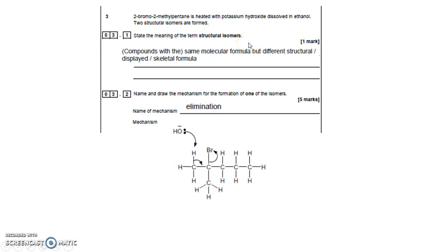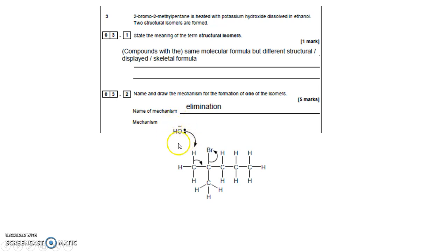Quick note: you draw OH⁻ — the minus can go anywhere, really, though it does go on the O. As long as you've got OH⁻ with a lone pair on the O, that will suffice. You don't involve the potassium at all, and similarly with sodium hydroxide you wouldn't involve the sodium. OH⁻ with a lone pair of electrons on the O.